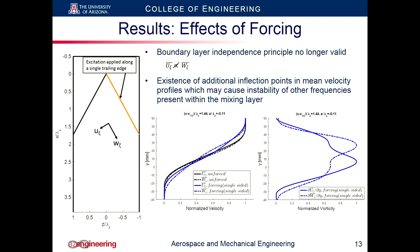That was in the absence of forcing. When we start to force — for example oscillating one flap of the trailing edge — we see large distortions in the mean velocity profile. The normal component and parallel component are no longer proportional, so the independence principle no longer applies. Additionally, looking at vorticity profiles, we can see additional inflection points opposite to each other, suggesting the mixing layer is susceptible to amplification of other frequencies and other instabilities in the flow.